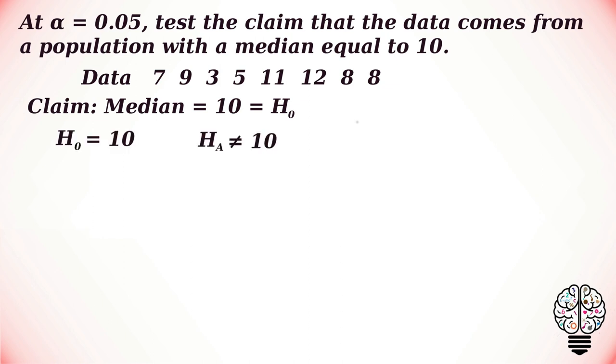This is a two-tailed test because the alternative hypothesis becomes not equal to, and not equal to is the symbol used in two-tailed hypothesis. So taking our data set, there are eight values in our data set: 7, 9, 3, 5, 11, 12, 8, 8. So n equals 8.